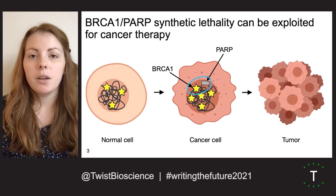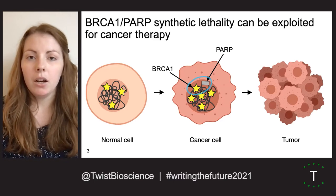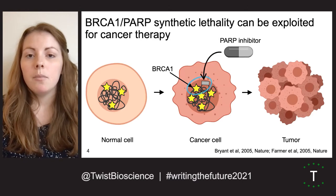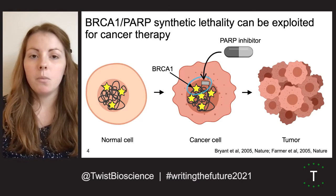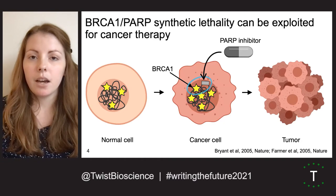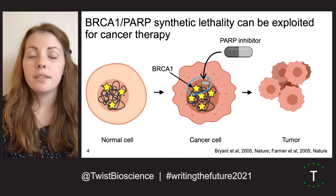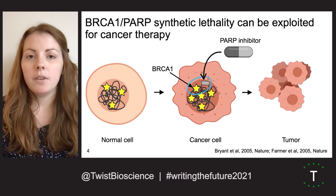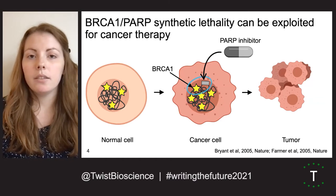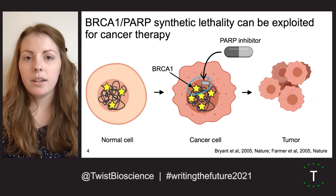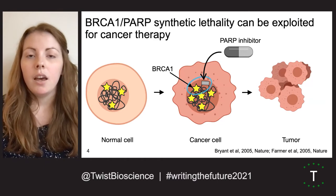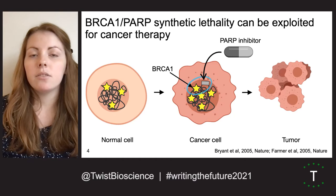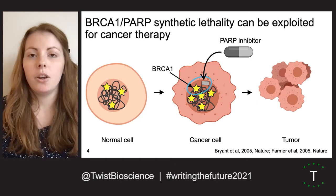PARP and BRCA1 are both involved in DNA repair. Inactivating either gene alone has no effect on growth, but inhibiting PARP in BRCA1 mutant tumor cells can cause cell death and tumor regression. This is an example of a synthetic lethal interaction where inactivating either gene in a pair alone has little effect on growth, but double inactivation leads to cell death. Synthetic lethal therapies have one major benefit in that they can target cancer cells specifically, reducing off-target effects.